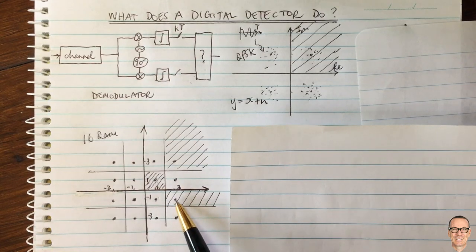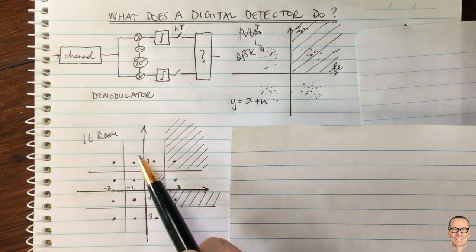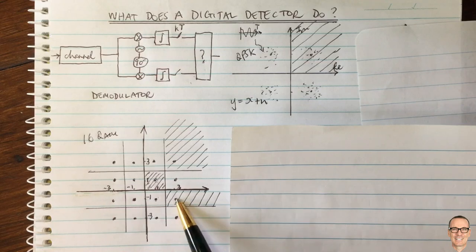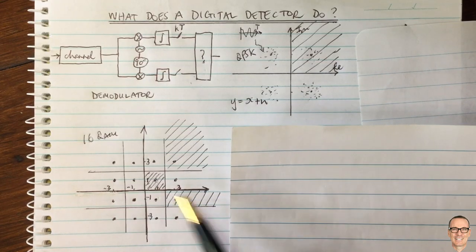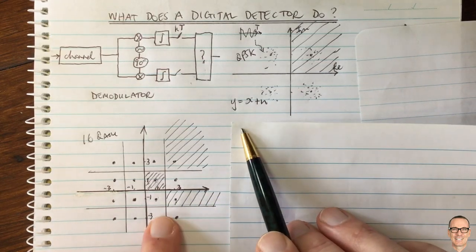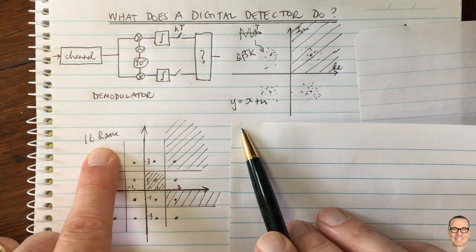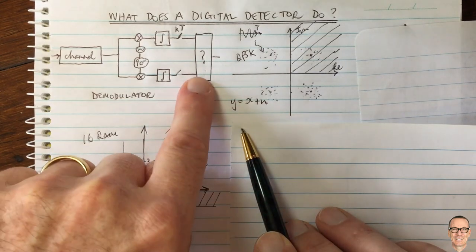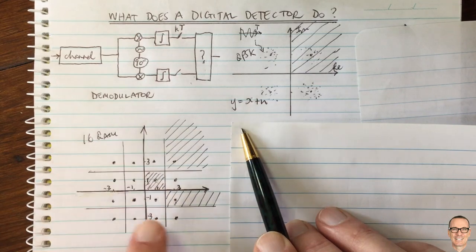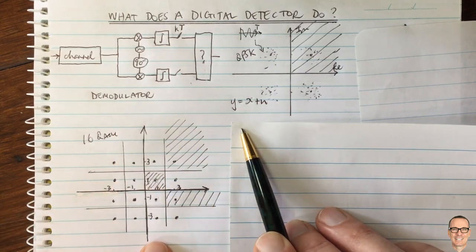There are eight of the edge-type boxes — one through eight. Work out the probability for each type and multiply accordingly, then take the average. That gives you the symbol error rate for 16 QAM. This is something you could do in the detector for 16 QAM — decide these decision boundaries.